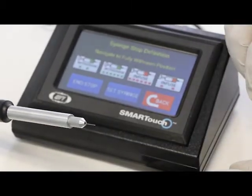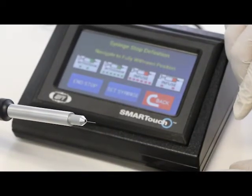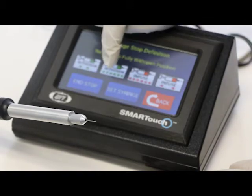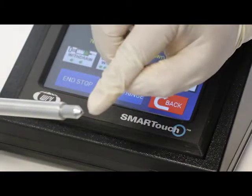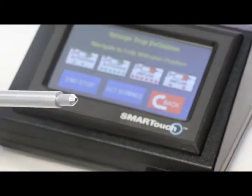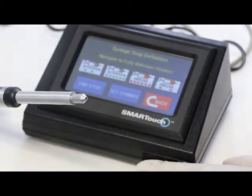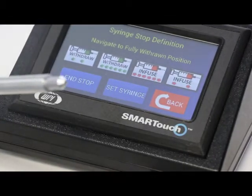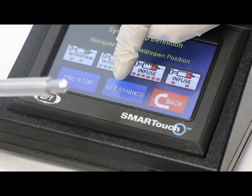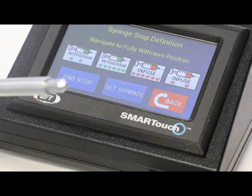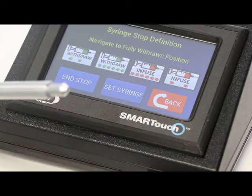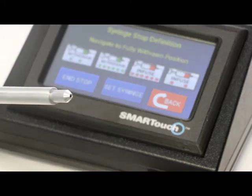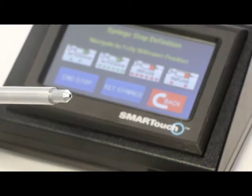Now to set the home position you're going to bring the plunger back to right under the collar. When you have the plunger right under the inside of the collar, you're going to hit set syringe. And this has set the plunger to this home position. And anytime you want the plunger to come back to the home position, this is the position.